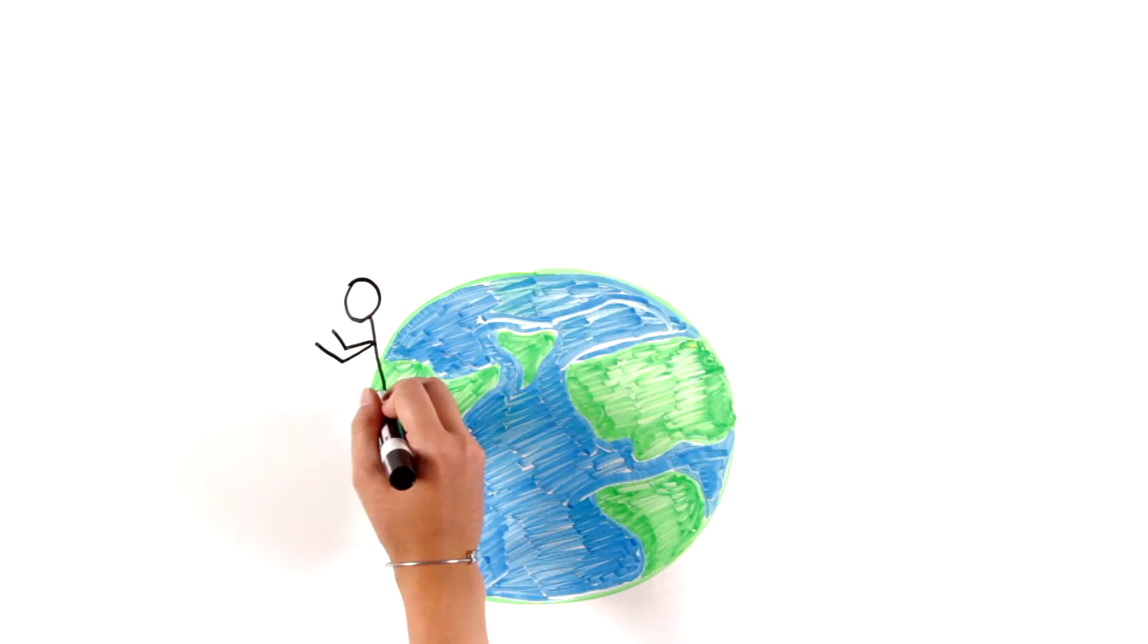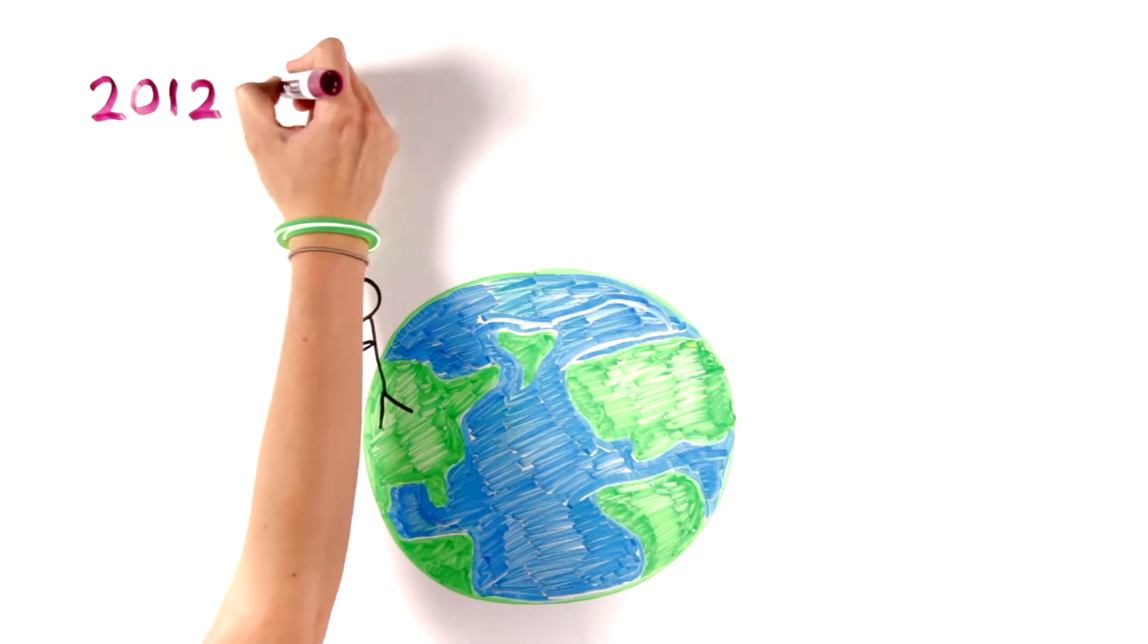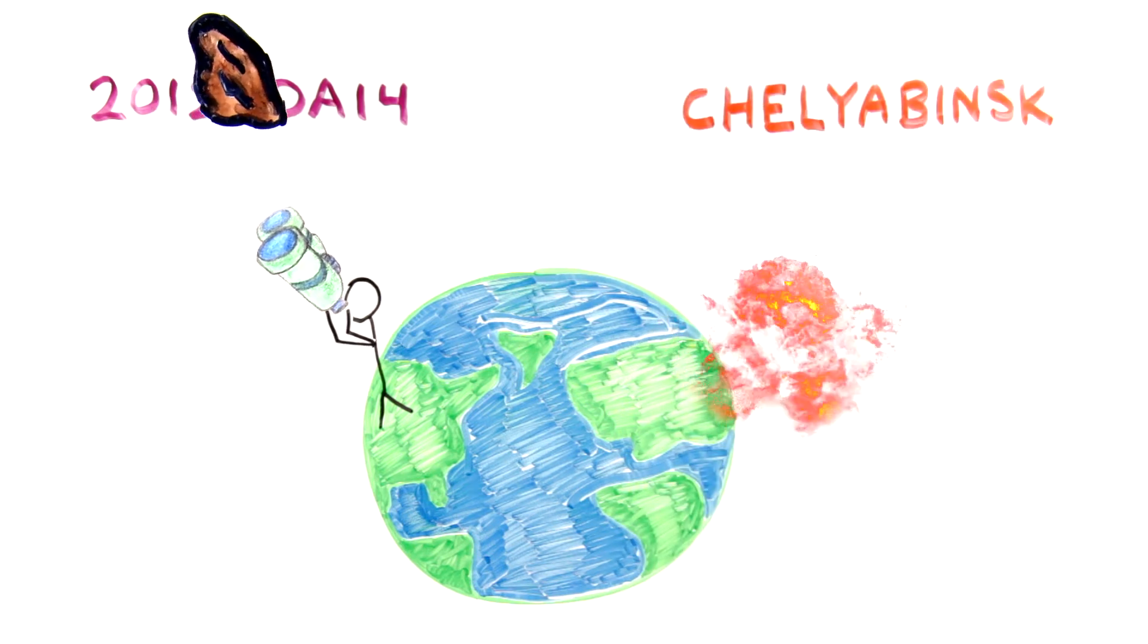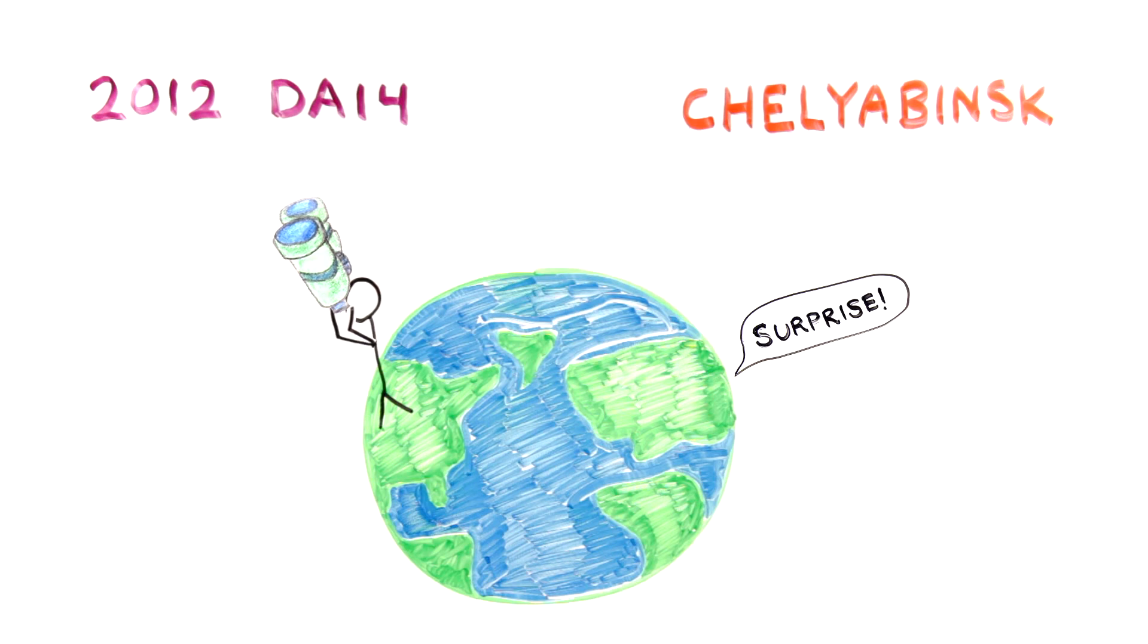Astronomers were tracking one of these PHAs, named 2012 DA14, on February 15, 2013, watching it fly close by Earth. On that same day, another unknown asteroid surprised everyone by crashing into Chelyabinsk, Russia, from a completely different direction.